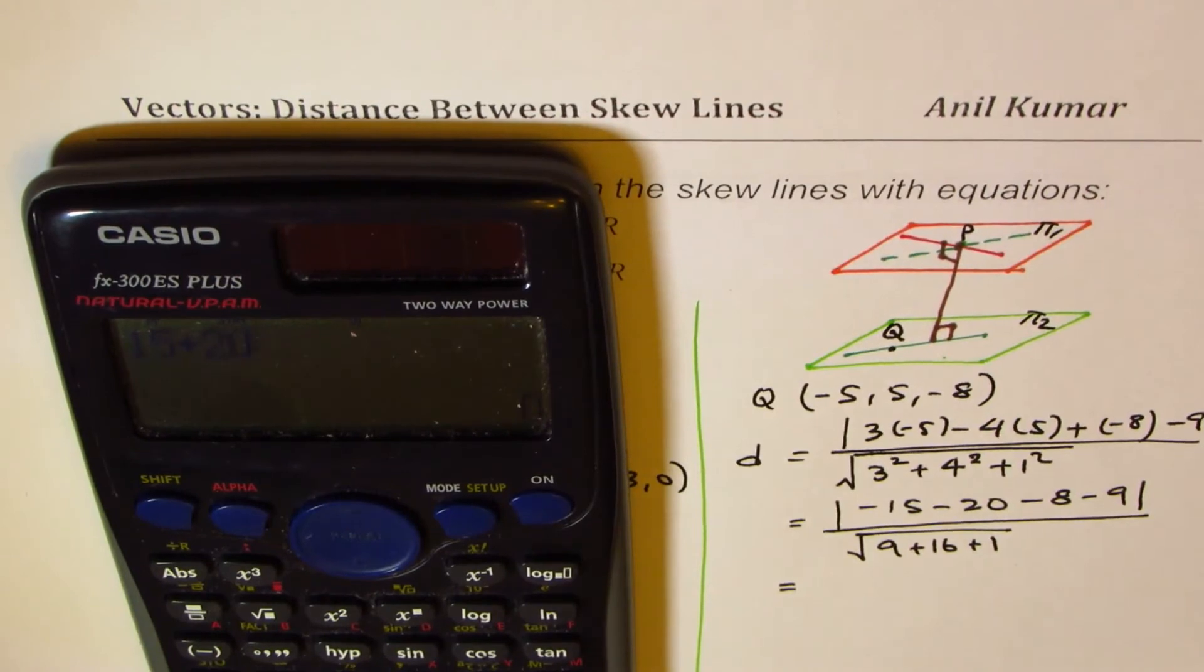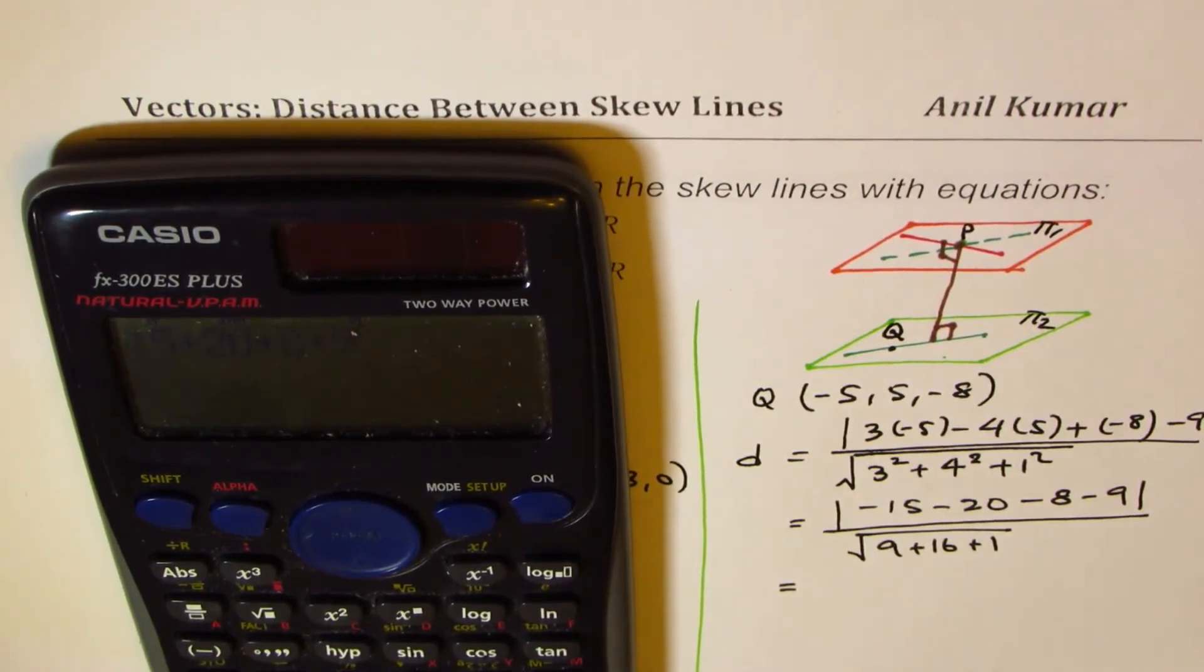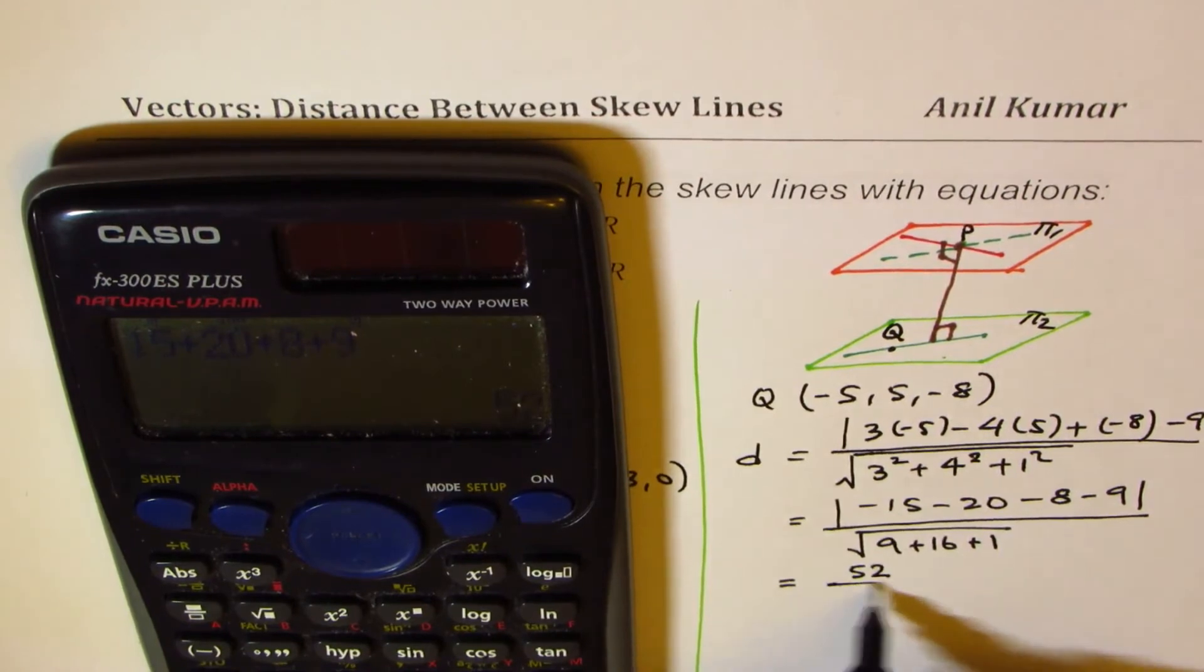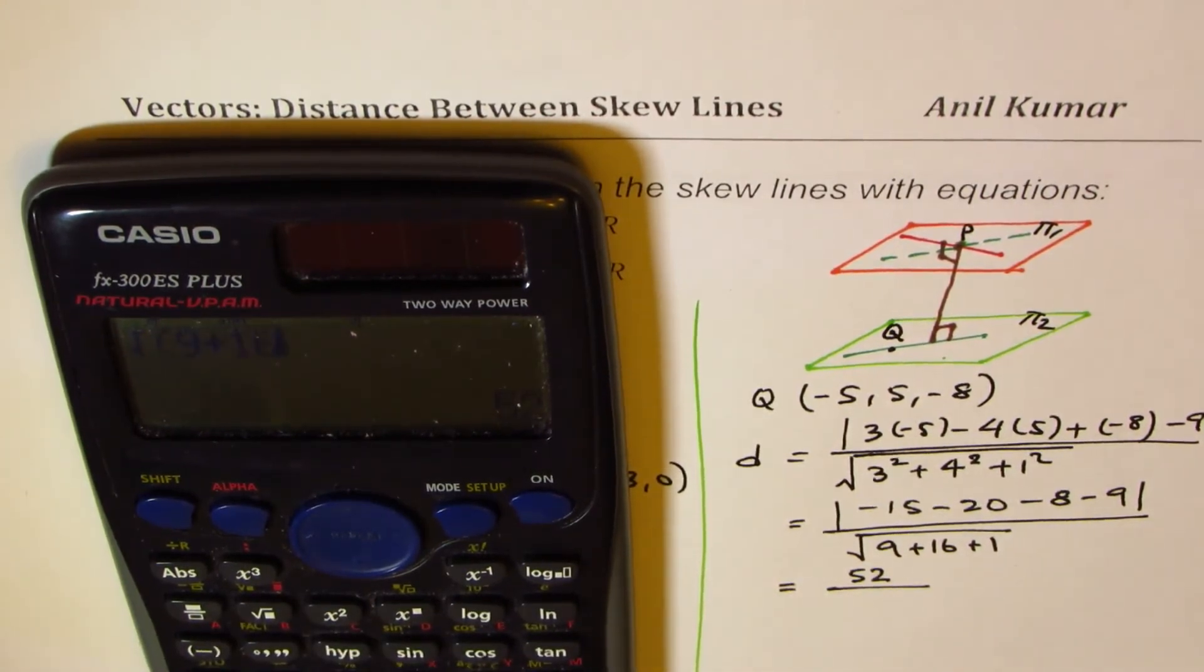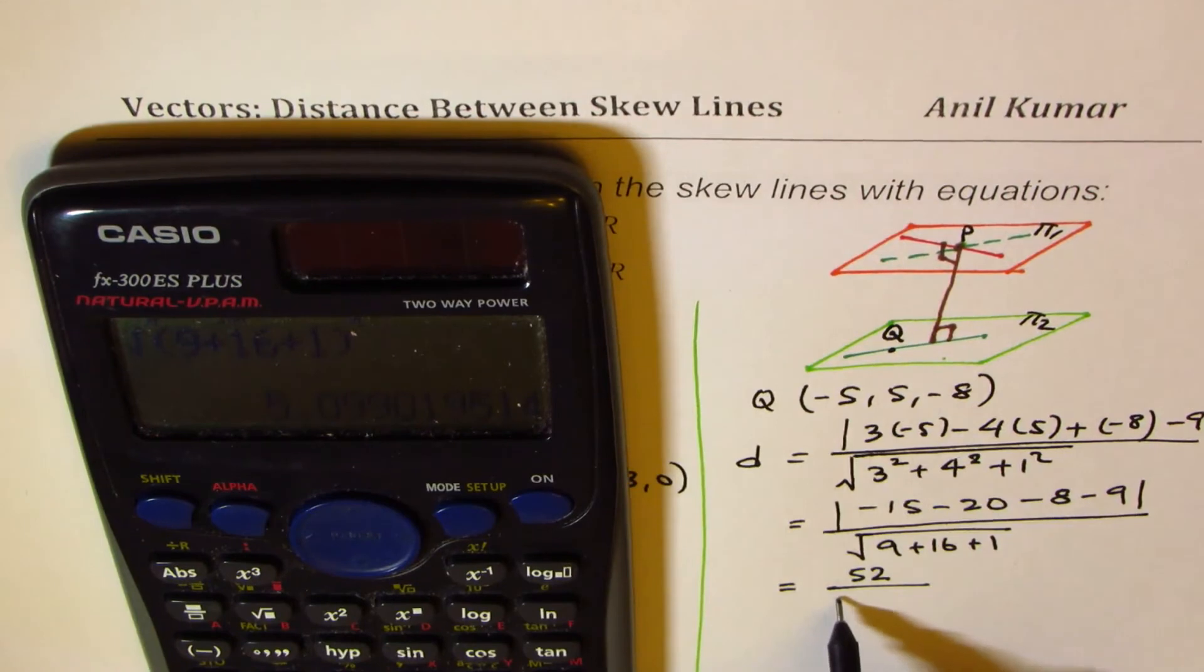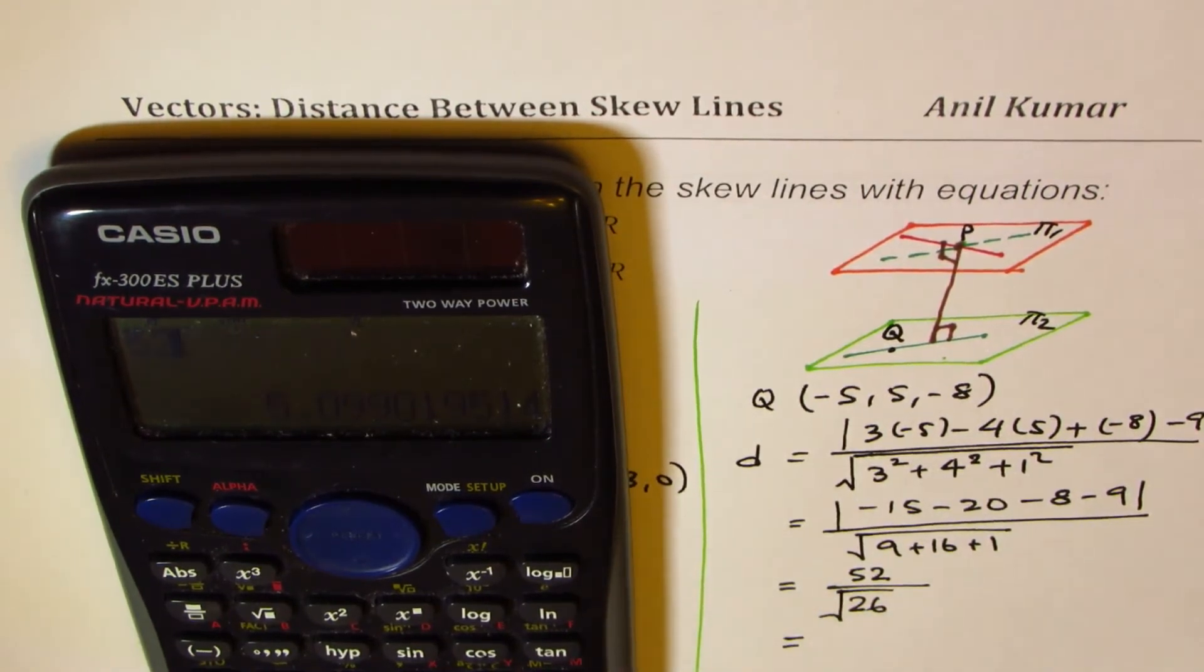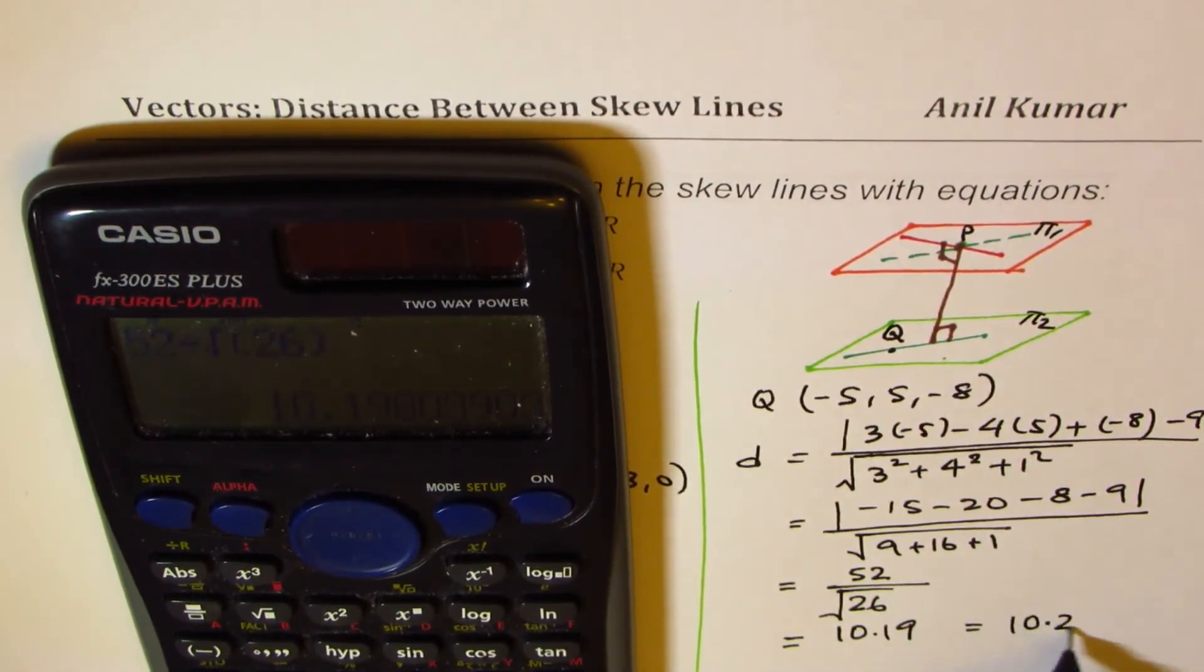So all this negative will turn to positive, so we have 15 plus 20 plus 8 plus 9 equals 52 over square root of 9 plus 16 plus 1, which is 5.09. Rather, let me write this first as 26, that is better, square root of 26. And now let's calculate this value: 52 divided by square root of 26 equals approximately 10.19 can be written as 10.2 units. So that is how you can find distance between skew lines.